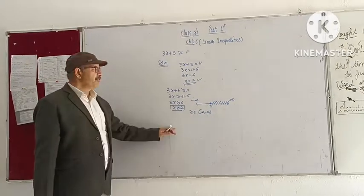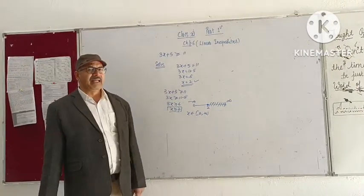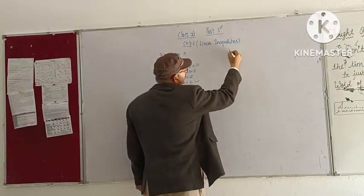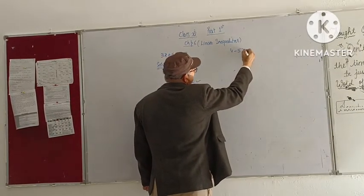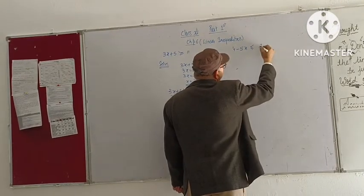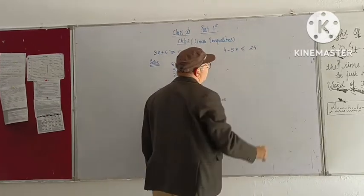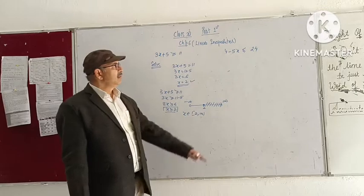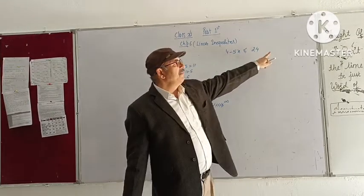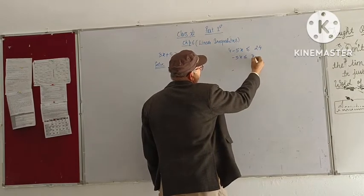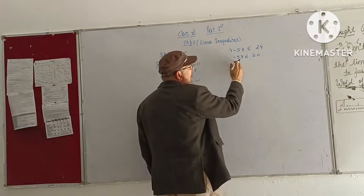And secondly, if I give you a question: 4 minus 5x is less than or equal to 24, solve this. When we ask you to give you a question, again 4, if I will take this 4 here, this is minus 5x is less than or equal to 20, and now minus 5.